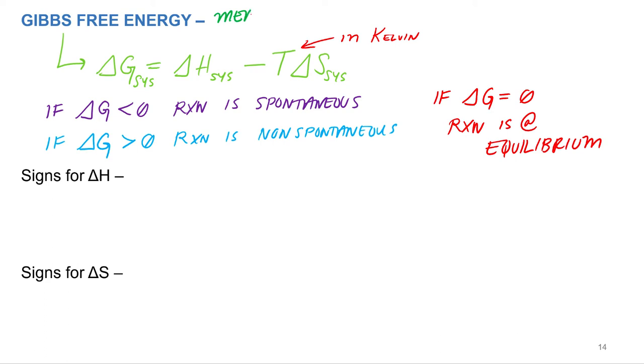Gibbs free energy is a measure of how much energy can be used. How much energy from a chemical reaction can be used for work.